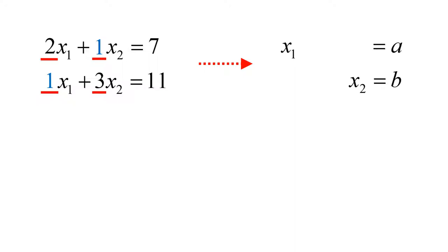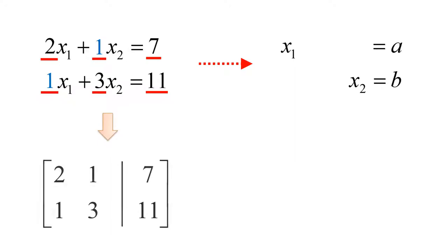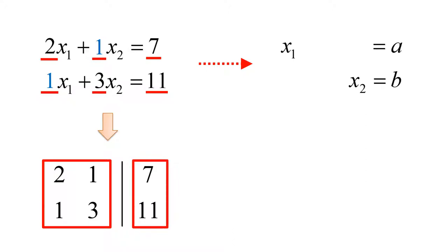Second, we also need to keep the numbers on the right-hand side — here we have 7 and 11. To keep such information, we use an augmented matrix. The augmented matrix is a two-dimensional array of elements having coefficients on the left-hand side and numbers on the right-hand side. We also use a vertical bar to represent the equal signs. This augmented matrix is equivalent to the system of linear equations above.